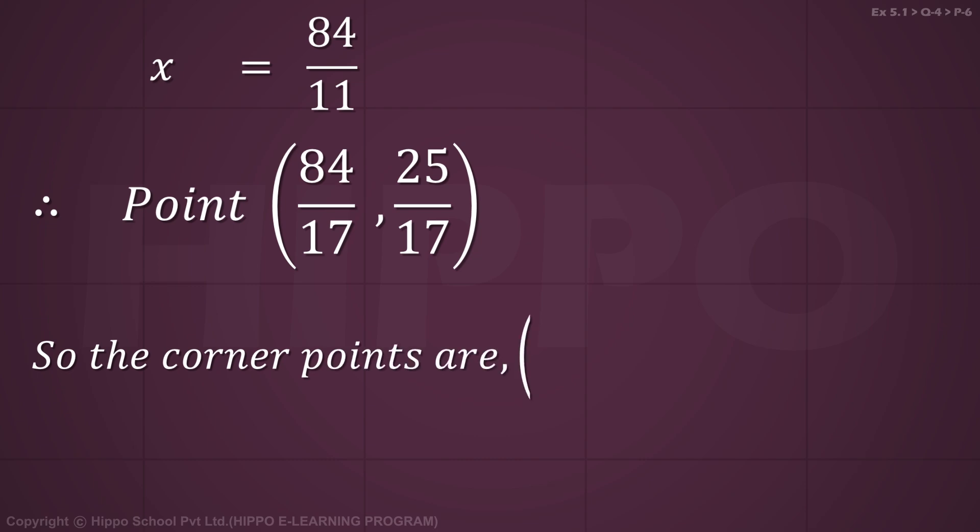We get x minus 2 times 25 by 17 equals 2. Solving gives the corner points: (0,5), (0,0), and the intersection point.